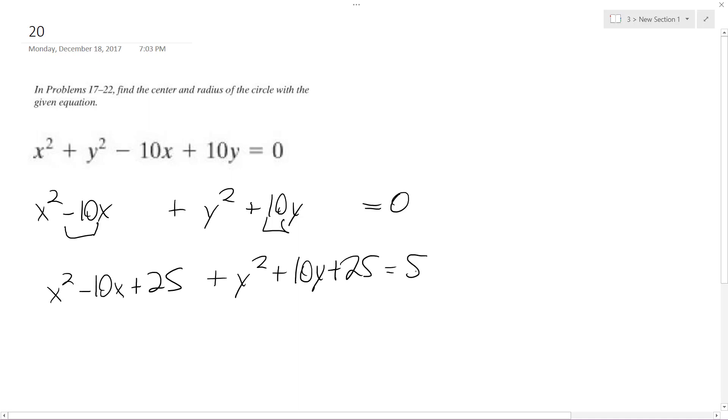So I get 25 plus 25 on the right side, because I've got to balance the equation, it's 50. So this becomes x minus 5 squared plus y plus 5 squared is equal to 50.